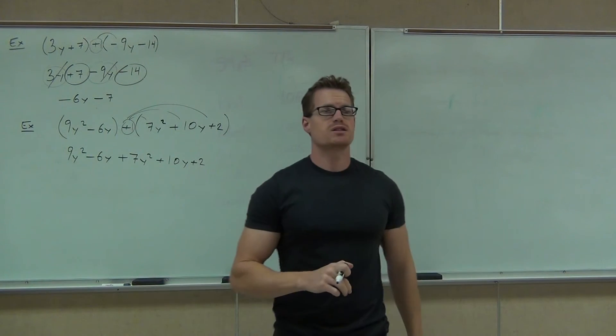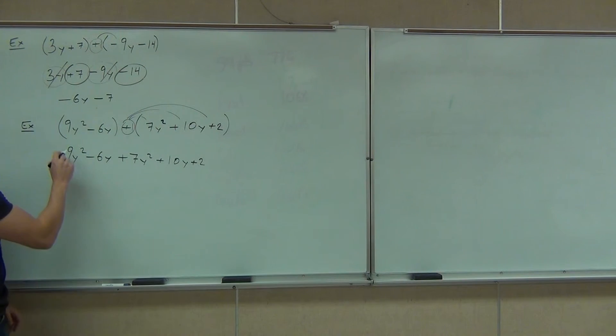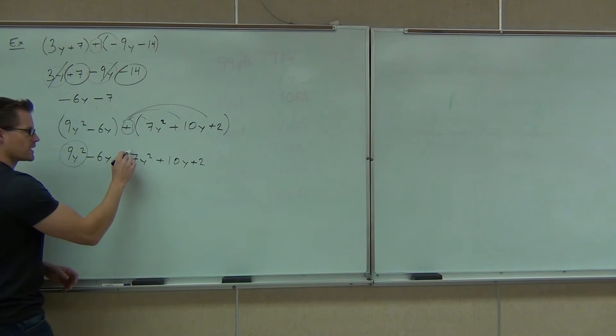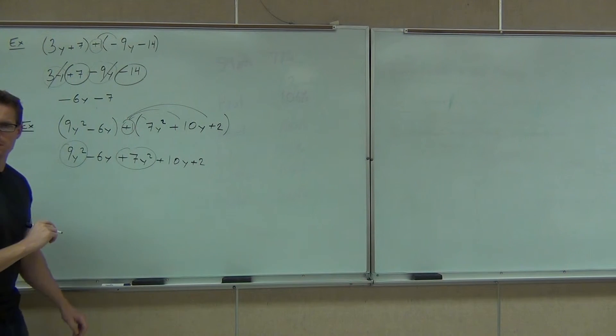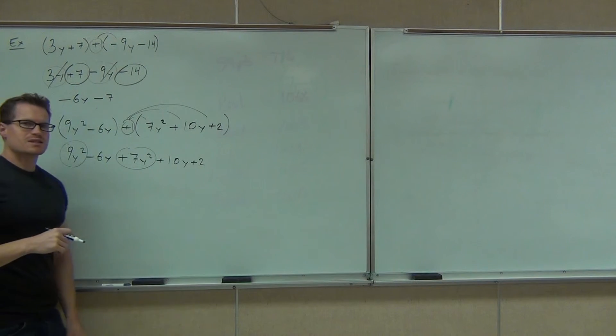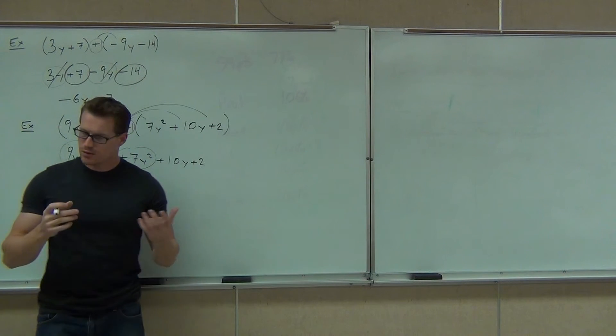If you distribute positive 1, nothing's going to change. So you'll still get plus 7y squared. Notice how we have the positive. So we're writing plus. We've got plus 10y and then plus 2. Now let's combine some like terms. Why don't you tell me what like terms I have up here? 9y squared and 7y squared. Great. Everybody, how much is that going to give me? 16y squared. Why don't we get 16y to the 4th? Do you do anything with those exponents when you combine them? No. Okay, good.